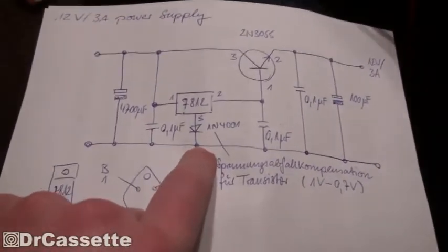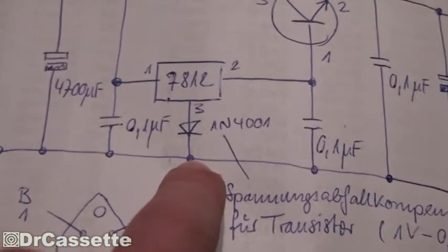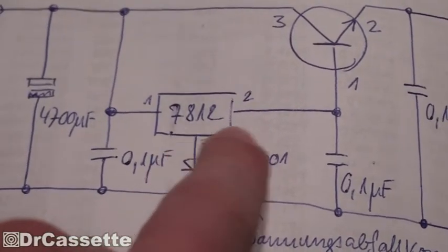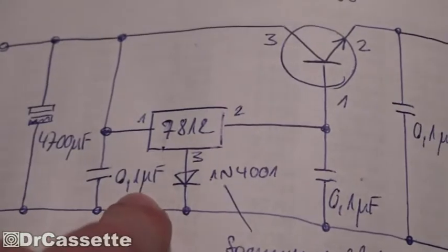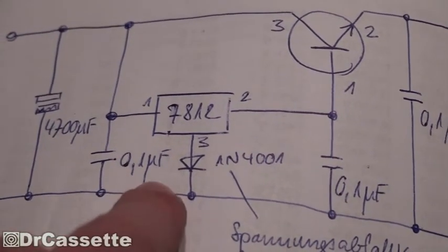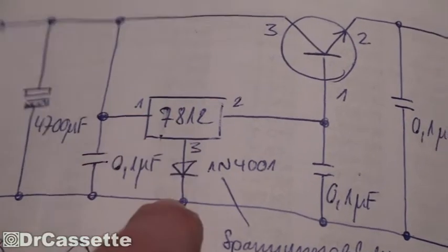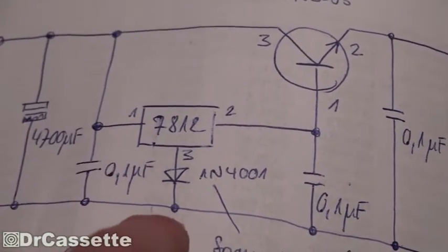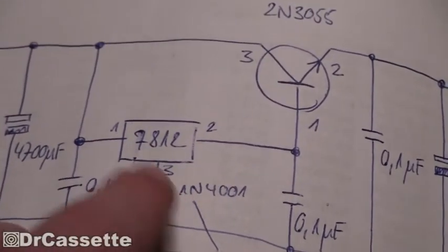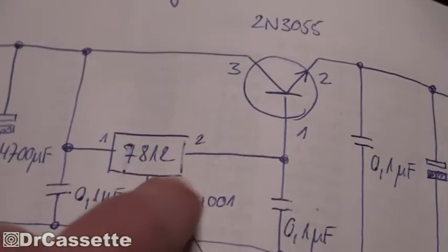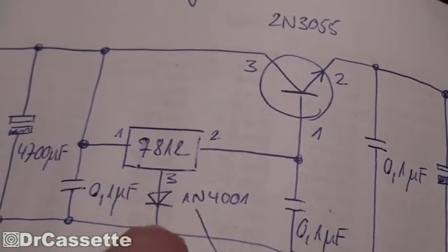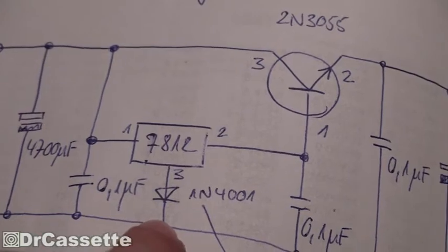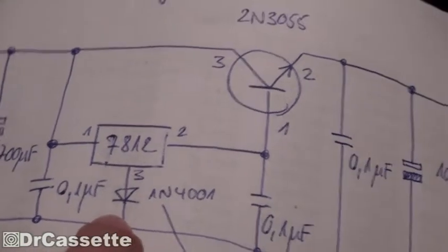Except there is a diode right here. The diode actually what it does is it raises the output of the 7812 voltage regulator slightly. Now the 7812 voltage regulator is only connected to ground because it needs the ground as a reference point to actually find out what 12 volts are.